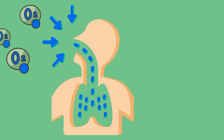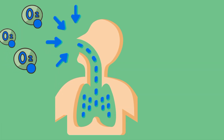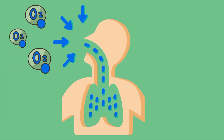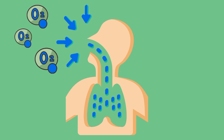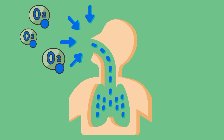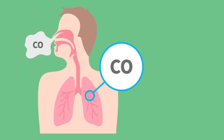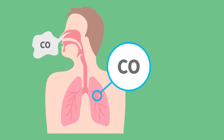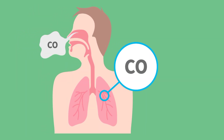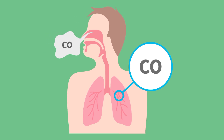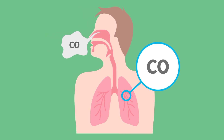Now, look at this diagram. It shows how we, along with all animals, inhale oxygen and exhale carbon dioxide. It's a perfect balance — we breathe in what plants breathe out.